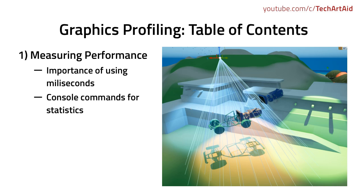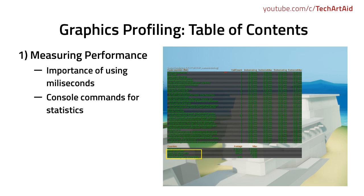The first part covers ways to measure performance in a professional, predictable way. I will show you how you can measure with milliseconds instead of FPS and what are the basic console commands for statistics. Here you can see scene rendering statistics that can count your dynamic lights, the cost of translucency, and the amount of draw calls. I will go through all the basic necessary stat commands in Unreal.